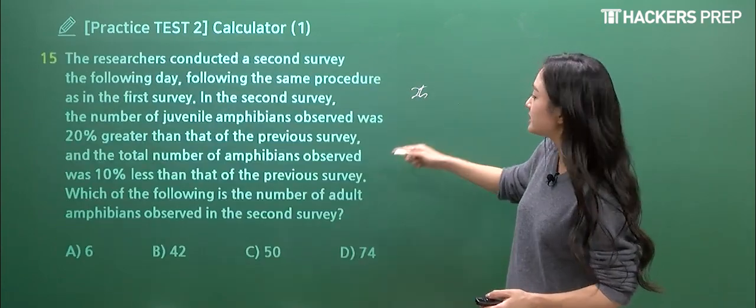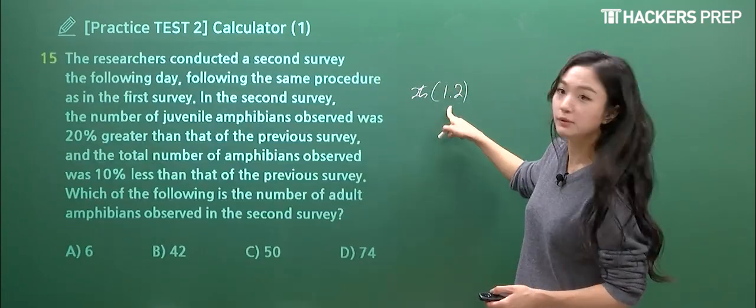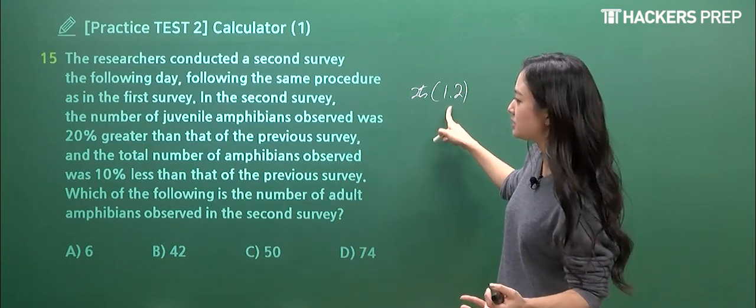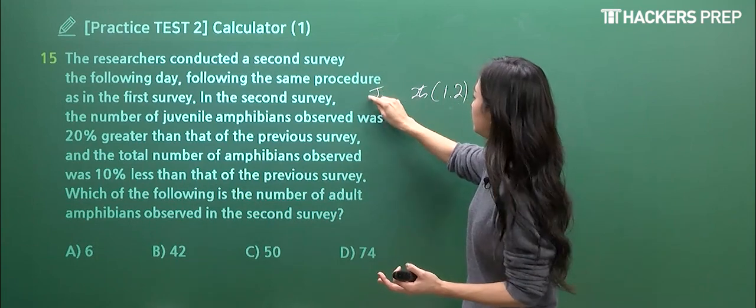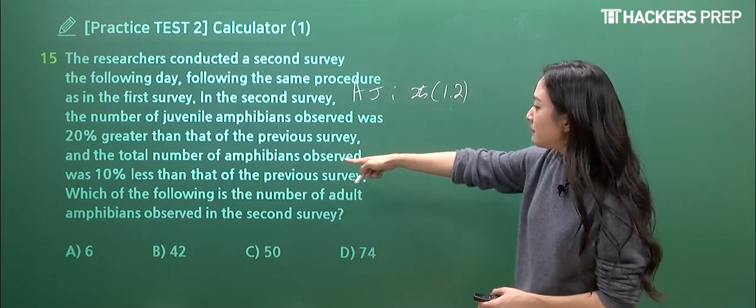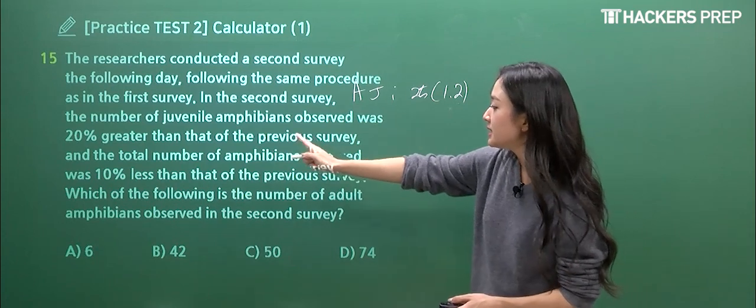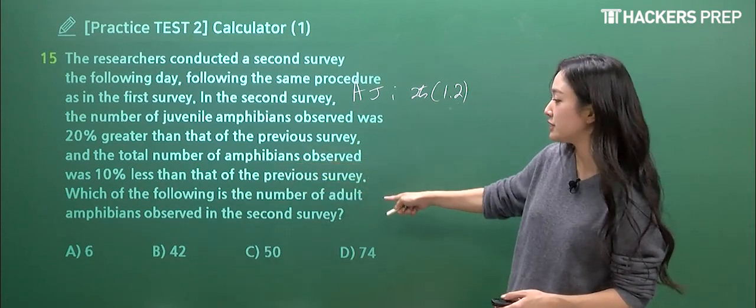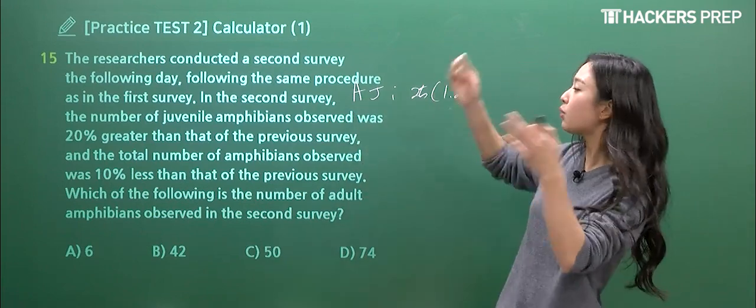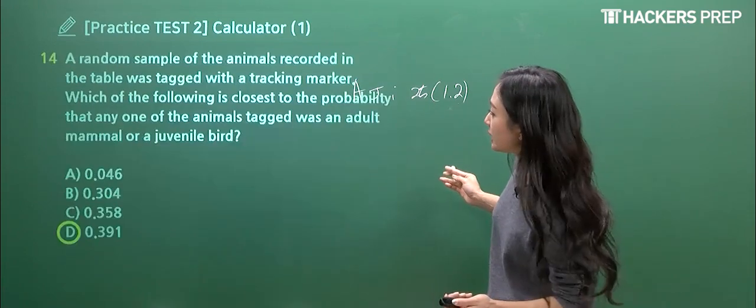Juvenile amphibians were 25. And when they're telling us that in the second sample, they are 20% greater, you're going to multiply it by 1.2. This is referring to juvenile amphibians. And the second one, total number of amphibians observed was 10% less than the previous survey. It's not juvenile or adult. It's going to be the total number of amphibians.